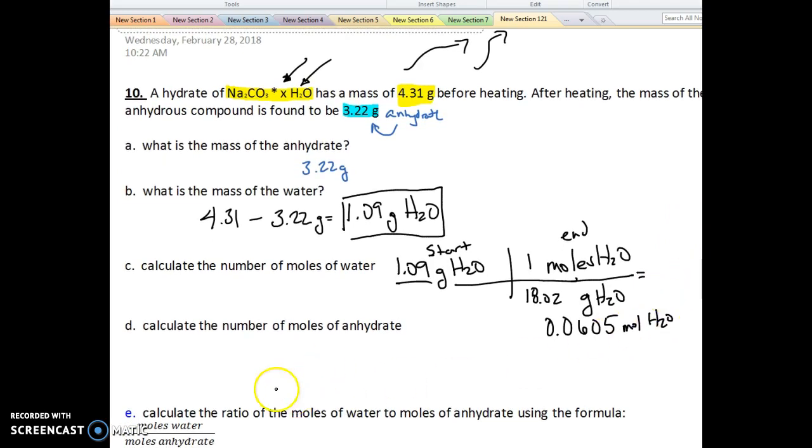The next thing it's going to do in Part D is Part D is going to ask us to calculate the moles of anhydrate, moles of anhydrate. So if I'm going to go back up here, and there's my anhydrate up at the top. So I'm going to start with my grams of anhydrate, 3.22 grams. And my anhydrate is Na2CO3, sodium carbonate. And I'm going to convert it to moles.